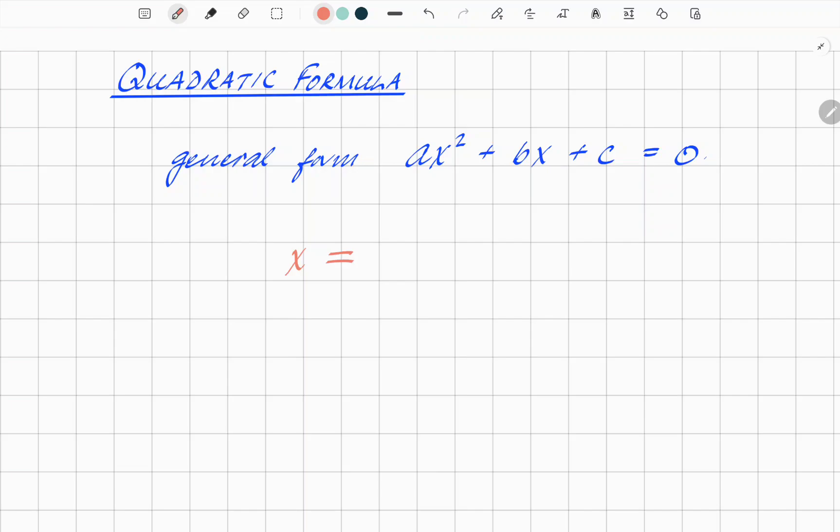The quadratic formula is as follows: x is given by minus b plus minus the square root of b squared minus 4ac all over 2a.